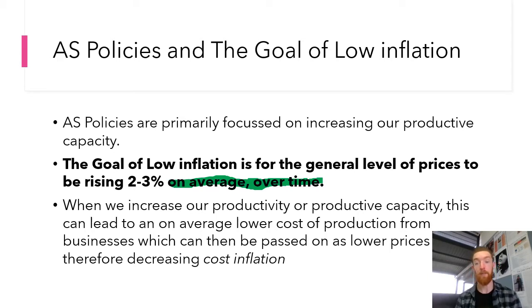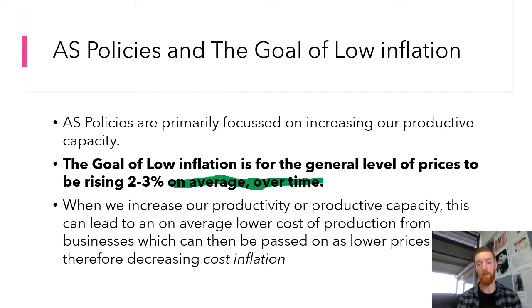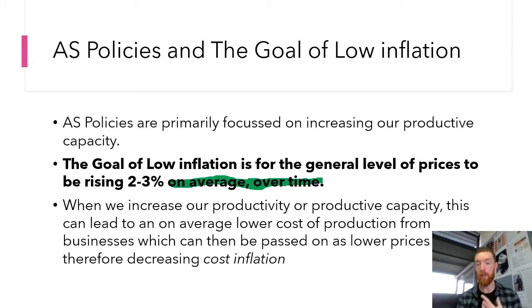For example, if a business implements new technology it can lower the average cost of production because they're paying less in labor, and that can be passed on as lower prices to consumers, decreasing cost inflation and reducing overall inflationary pressure in the economy. That's what aggregate supply-side policies are designed to do — create non-inflationary growth. If effective, AS policies are never going to lead to inflation; they're always going to ease it, specifically cost inflation, by lowering average cost of production through improved efficiency.